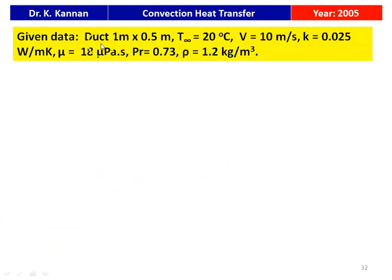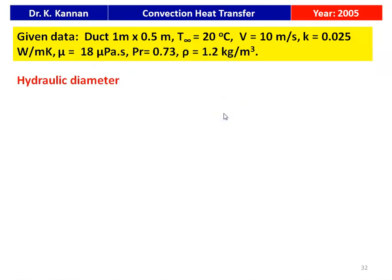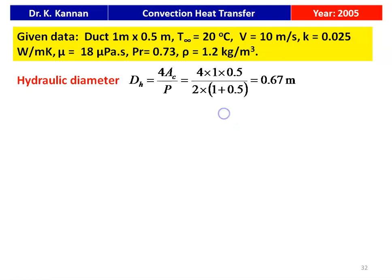Given data: duct of rectangular cross section 1 m × 0.5 m, fluid temperature 20°C, velocity 10 m/s, thermal conductivity 0.025 W/m·K, viscosity 18 micro Pascal-second, Prandtl number 0.73, density 1.2 kg/m³. For a rectangular duct, we calculate the hydraulic diameter: D_H = 4 × A_c / P. Area is 1 × 0.5, perimeter = 2 × (1 + 0.5), giving D_H = 0.67 meter.